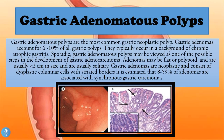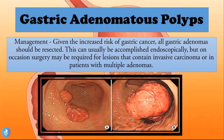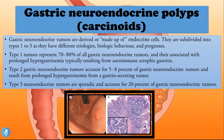Adenomas may be flat or polypoid, are usually less than two centimeters in size, and are usually solitary. They are neoplastic and consist of dysplastic columnar cells with striated borders. It is estimated that eight to fifty-nine percent of adenomas are associated with synchronous gastric carcinomas. Given this increased risk, all gastric adenomas should be resected — usually endoscopically, but surgery may be required for invasive carcinoma or multiple adenomas.